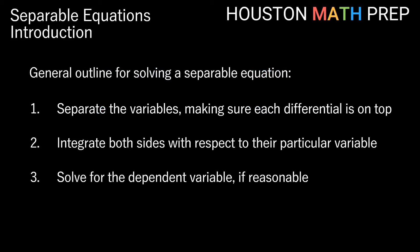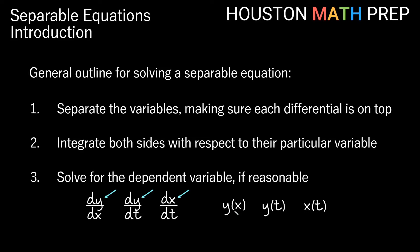Before working examples, here is the general outline: separate the variables using basic algebra, making sure dy's, dx's, etc. are on top on their respective sides; integrate both sides with respect to their variables; and if it's reasonable to solve for the dependent variable, do so. The dependent variable is identified by the numerator in derivative notation — in dy/dx, y is dependent; in dy/dt, y depends on t; in dx/dt, x depends on t. With prime notation, we assume the usual conventions, such as y depending on x or y depending on t.